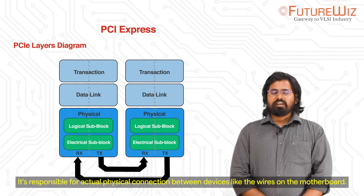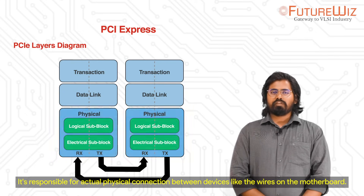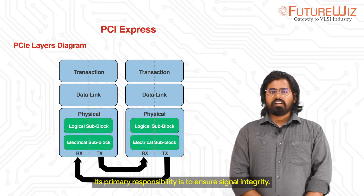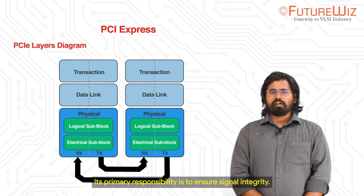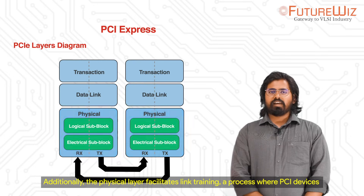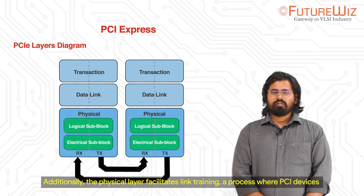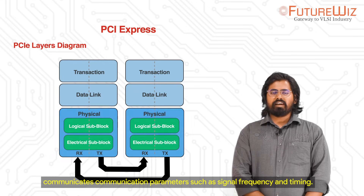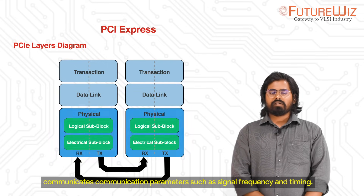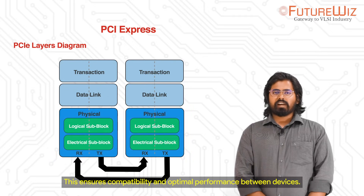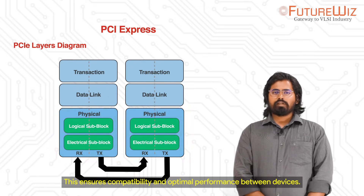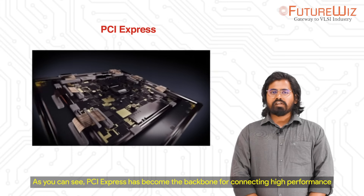At the base, we find the physical layer, which is responsible for the actual physical connection between devices, like the wires on the motherboard. Its primary responsibility is to ensure signal integrity. Additionally, the physical layer facilitates link training, a process where PCI devices communicate parameters such as signal frequency and timing. This ensures compatibility and optimal performance between devices.